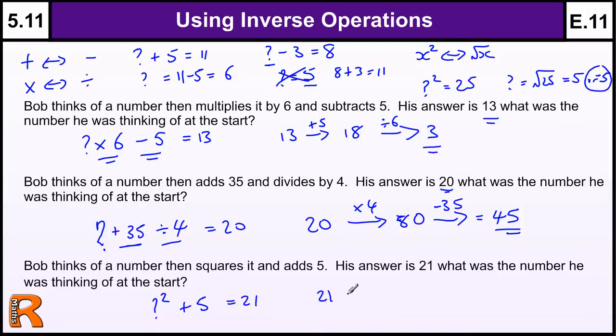So to undo that, we start with 21. We undo the last thing first. So we take away the 5 to get 16, and then we need to square root the 16 to get 4. Technically it could be minus 4, but we're really just interested in the 4 unless we're told to give multiple answers.